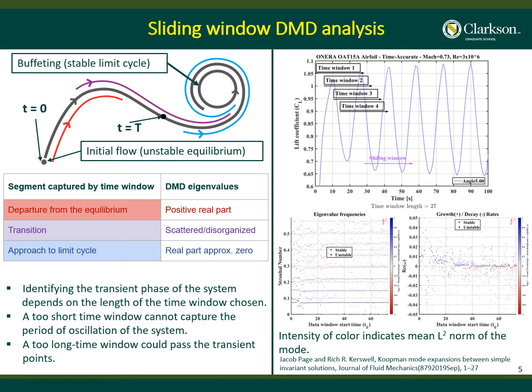The time window should not be too small, because we need to capture the time period of the system. The time window should also not be too long, because it will pass the transition point, which gives a disordered spectrum. Now we need to visualize this.